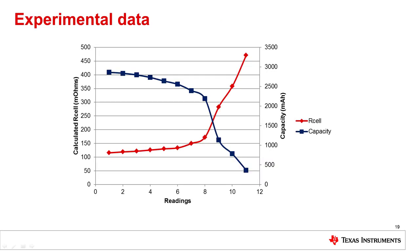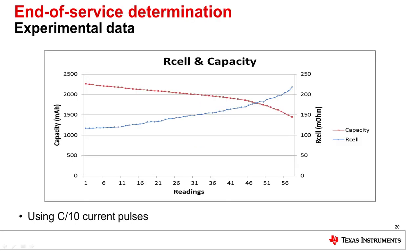Some experimental data was captured using a lithium-ion cell that was cycled periodically with learning pulses captured as it aged. The R cell showed a slight increase followed by a quite dramatic increase as capacity faded and dropped off. It was realized that readings were not being taken as often as needed, so the experiment was repeated with a different lithium-ion cell with more measurement resolution. The capacity measured from cycling slowly faded and began to accelerate toward the end, while the R cell values steadily increased and picked up in slope as capacity also dropped off at a faster rate.